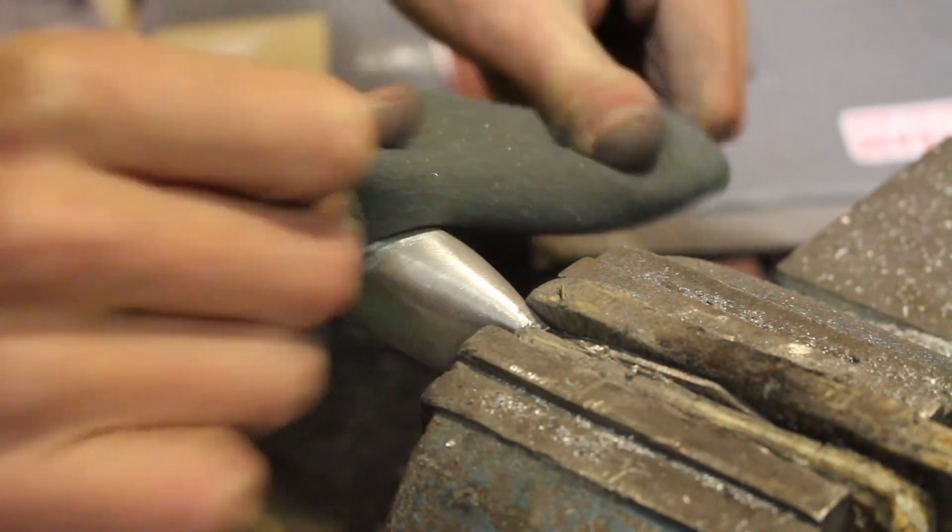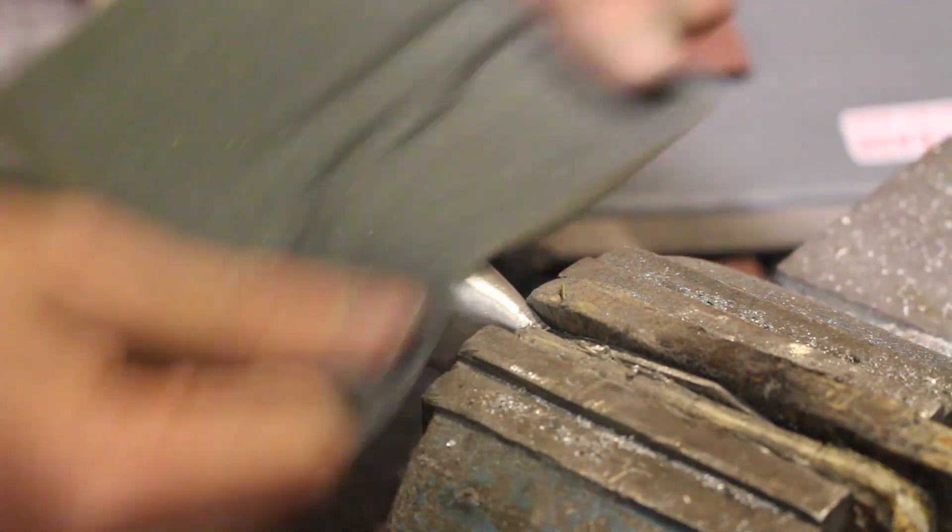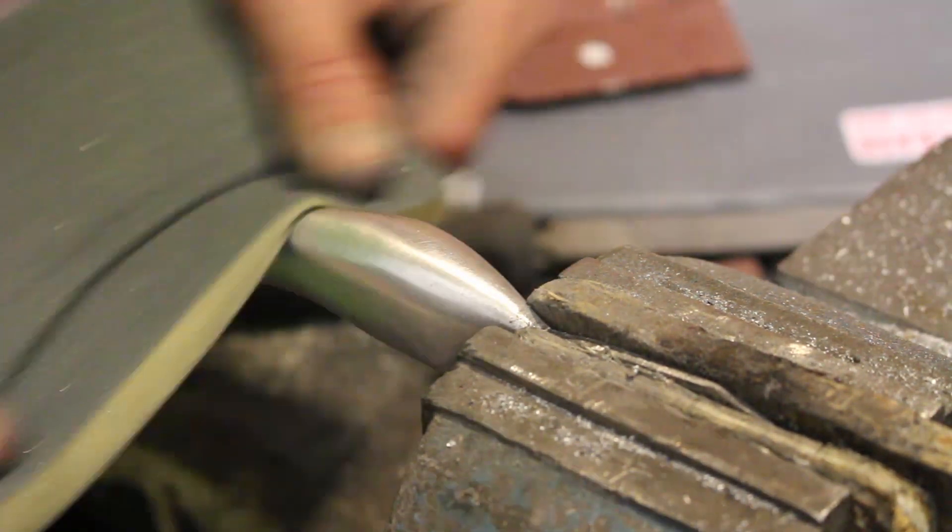After that I move on to a 400 grit sanding pad which helps to remove some more scratches and also since it's so soft it leaves a very nice curved surface finish.